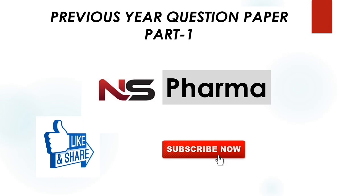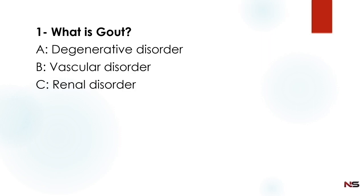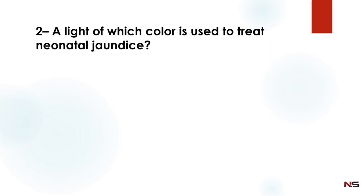First question: What is gout? Option A: degenerative disorder. Option B: vascular disorder. Option C: renal disorder. Option D: metabolic disorder. The correct answer is Option D — metabolic disorder. Gout is a metabolic disorder.